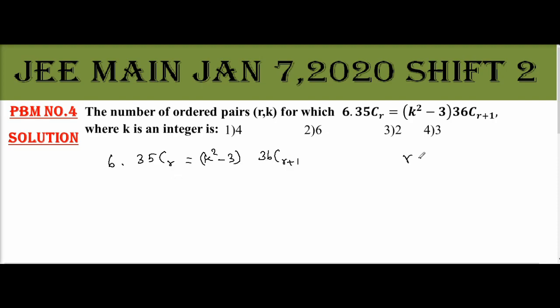Now, we need to find what r is and what k is. We are going to solve this problem using the simple nCr formula. The nCr formula is n factorial by r factorial into n minus r factorial. This is the simplest formula we are going to apply in this problem.